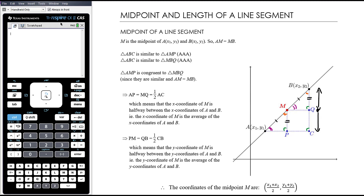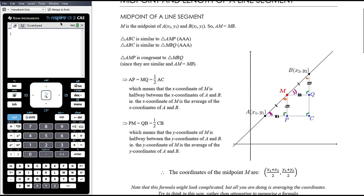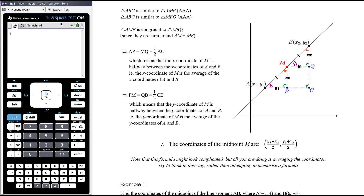Similarly, the fact that the two triangles are congruent tells us that AP is the same as MQ. That means the X coordinate of M is halfway between the X coordinates of A and B. So if we want to find halfway between two points, we simply average. The X coordinate of the midpoint is the average of the X coordinates, and the Y coordinate is the average of the Y coordinates. Here is our formula for the midpoint.